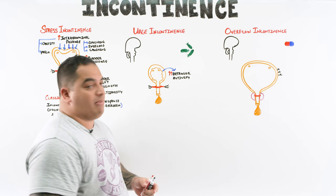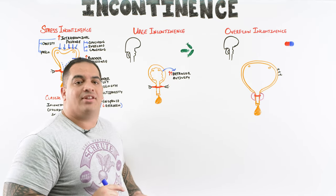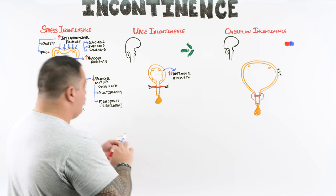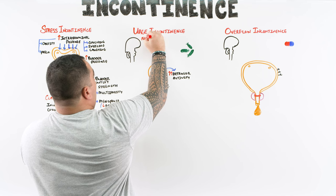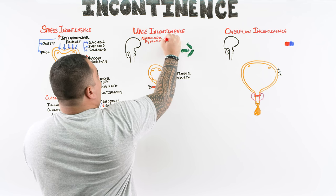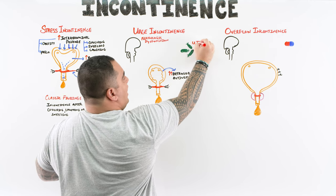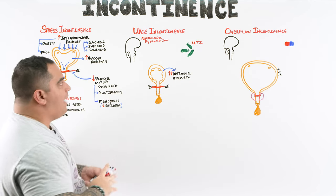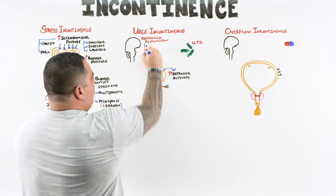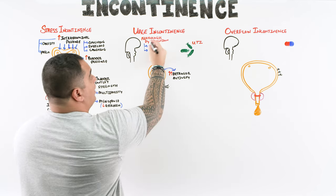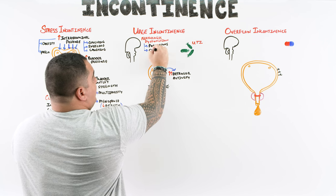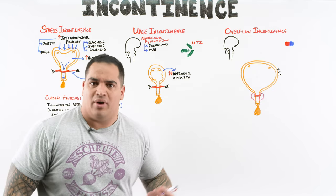What causes increased detrusor activity? It's usually some type of neurological dysfunction, or it could be due to inflammation — typically a urinary tract infection. Neurological causes include Parkinson's disease, strokes, and spinal cord injuries, usually injuries above the brainstem.